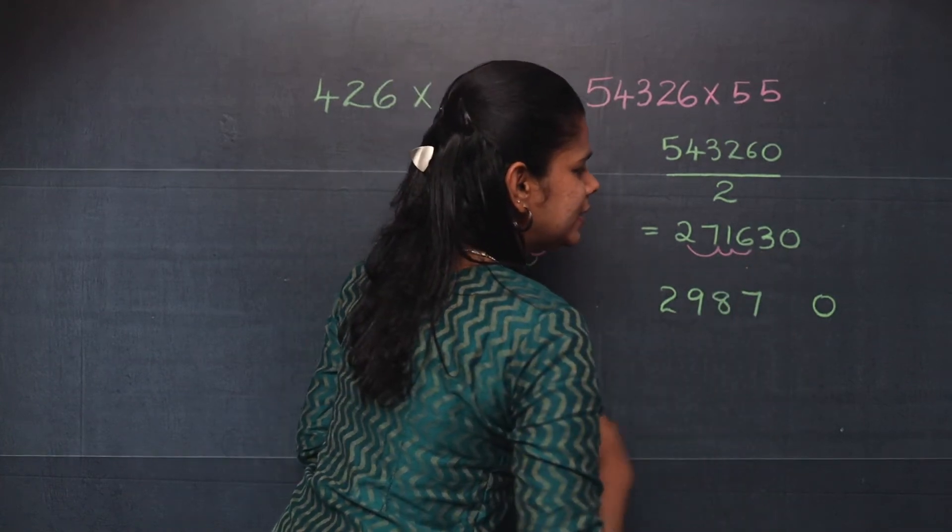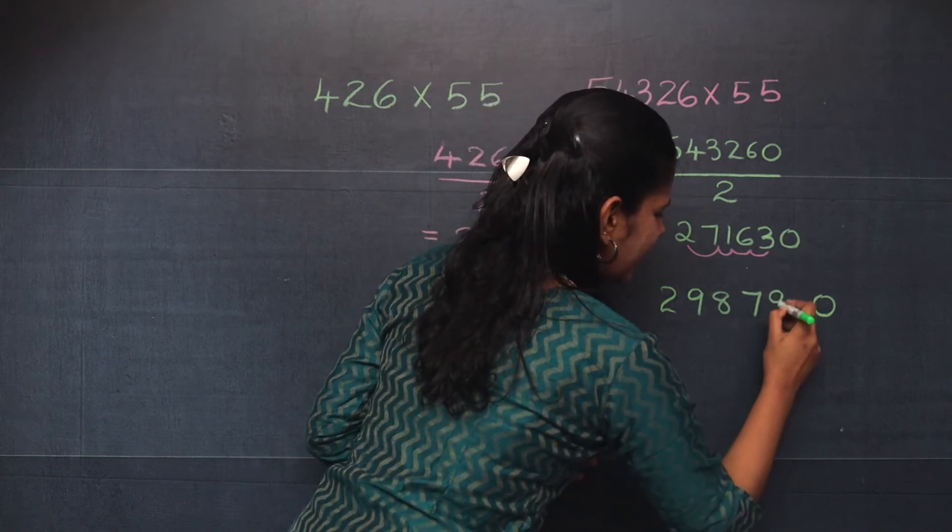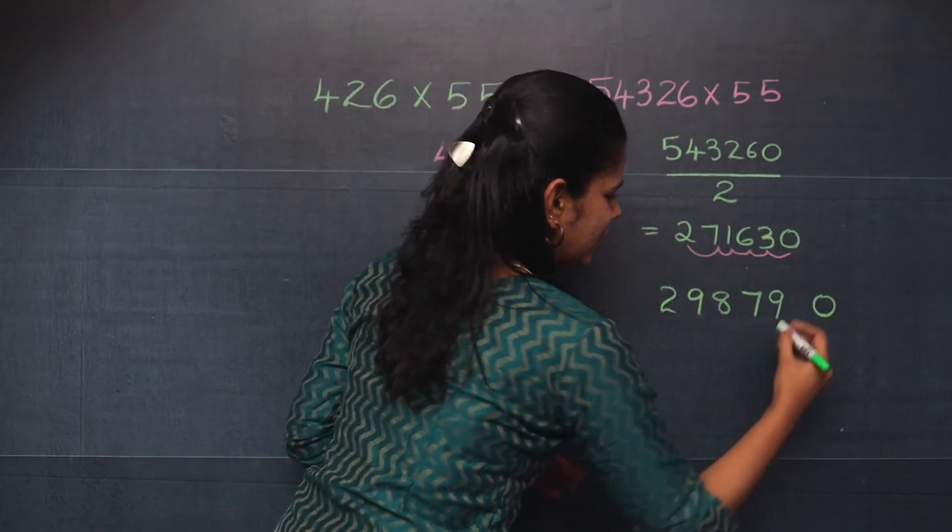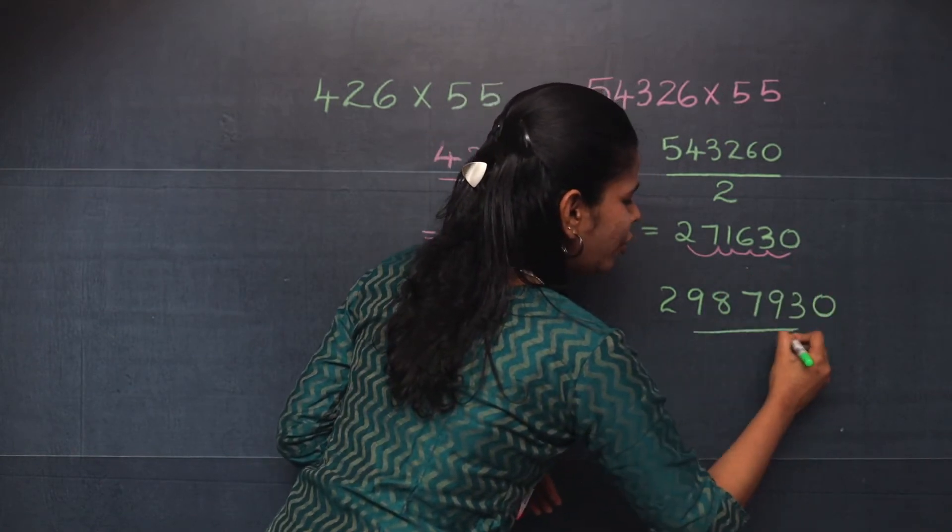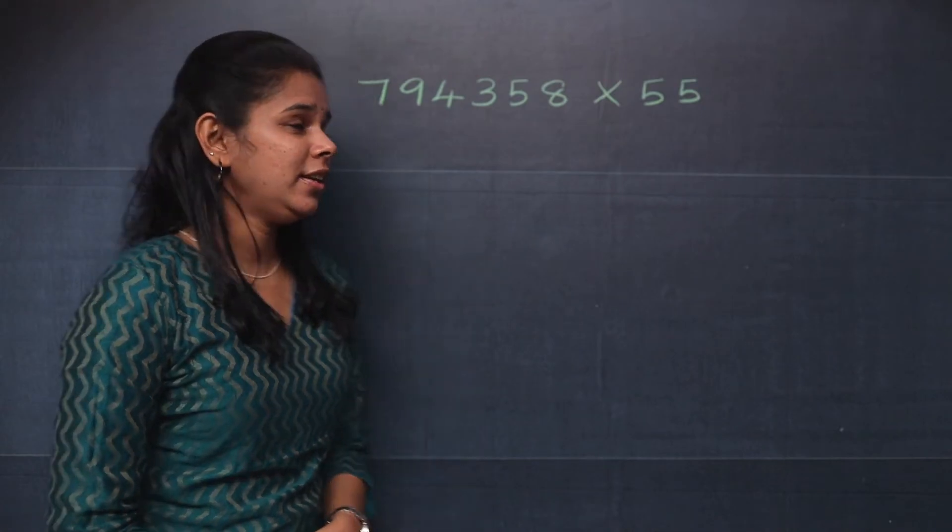And 6 plus 3, it is 9. And what is 3 plus 0? It is 3. So this becomes your answer. Let us move on to the last question.